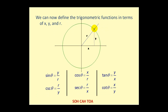Using this right triangle for angle theta — called a reference triangle — we can define the trigonometric functions in terms of x, y, and r. If theta is our angle, y is the opposite side, r is the hypotenuse, and x is the adjacent side.